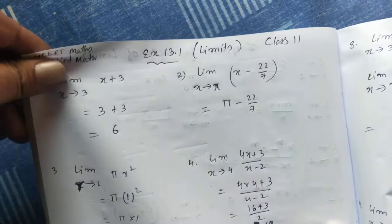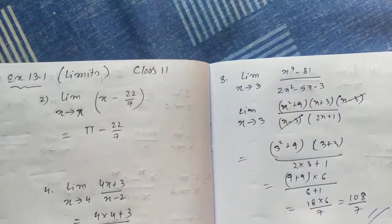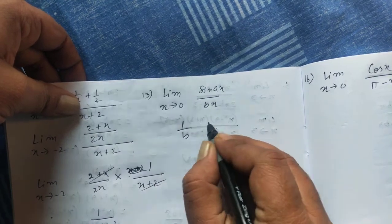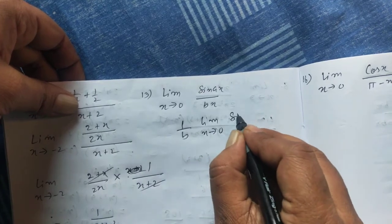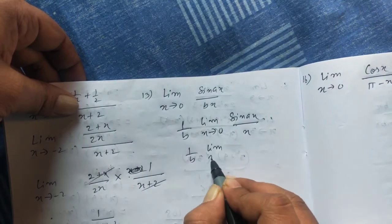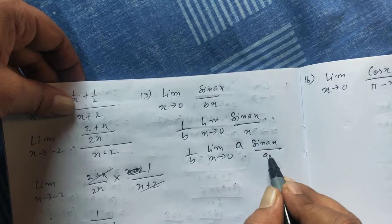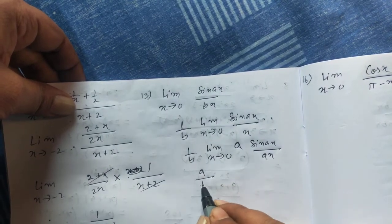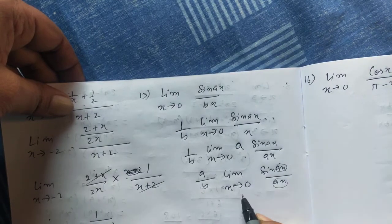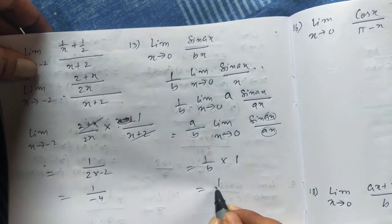That's question number 13. This is based on the formula: limit x→0 of sin x / x = 1. Here, b is a constant, so we can take it out. Limit x tends to 0, sin(ax) / x is left. Since this is ax, I can multiply and divide by a: sin(ax) / (ax) = 1. So the answer is 1/b.